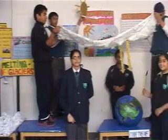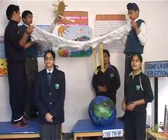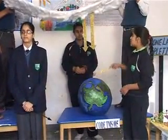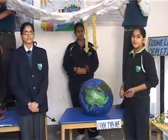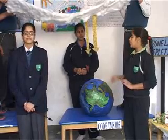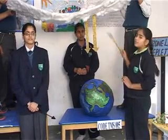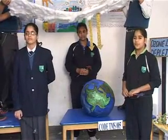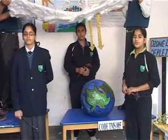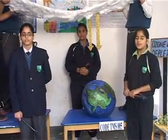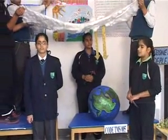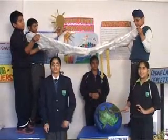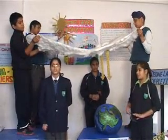The decrease in the concentration of ozone in the ozone layer is called ozone depletion. 10 to 50 km above the earth's surface, the ozone layer is found, which contains 90% of atmospheric ozone. Ozone is essential to life on earth because it absorbs harmful ultraviolet radiation from the sun. Now my friend will tell you where ozone is found.